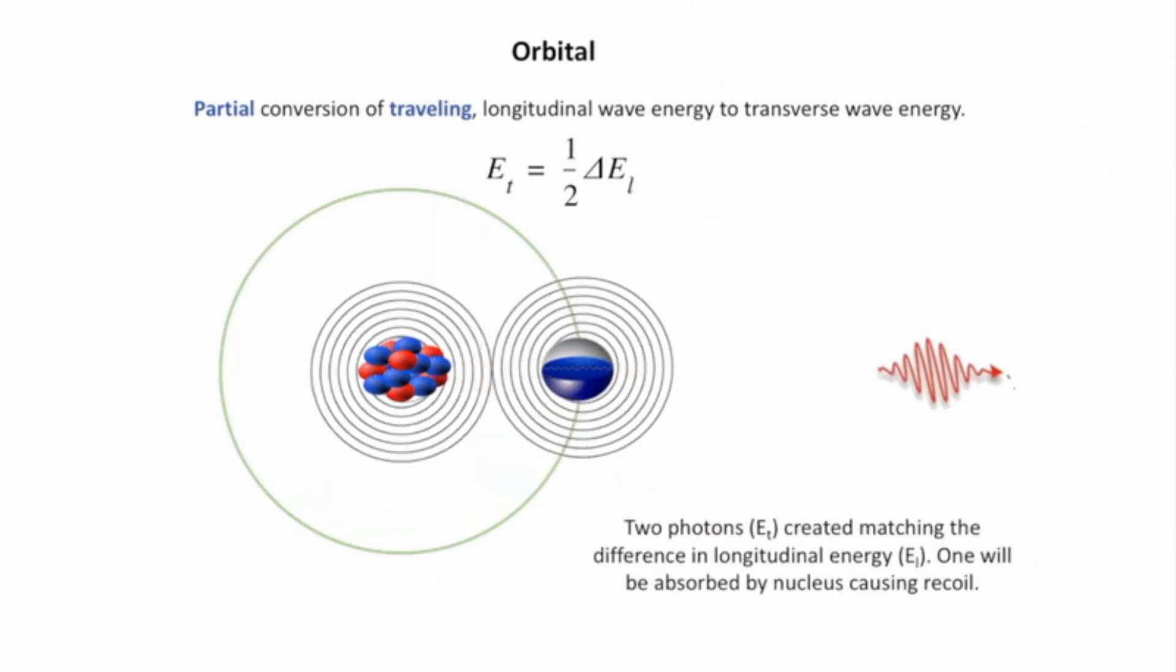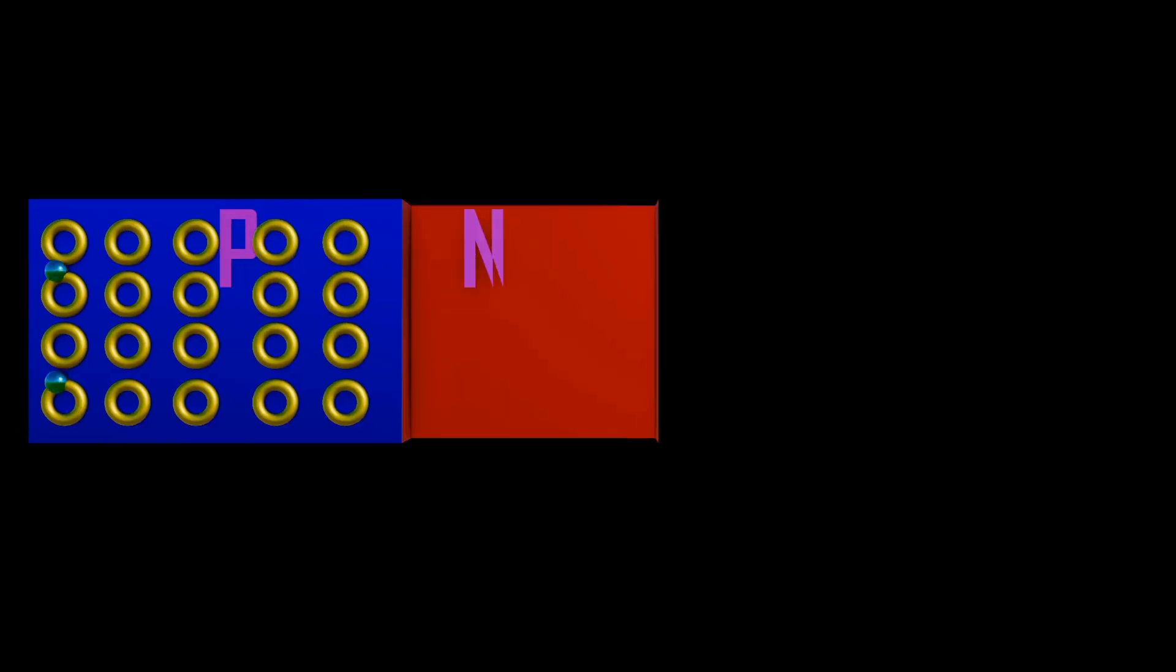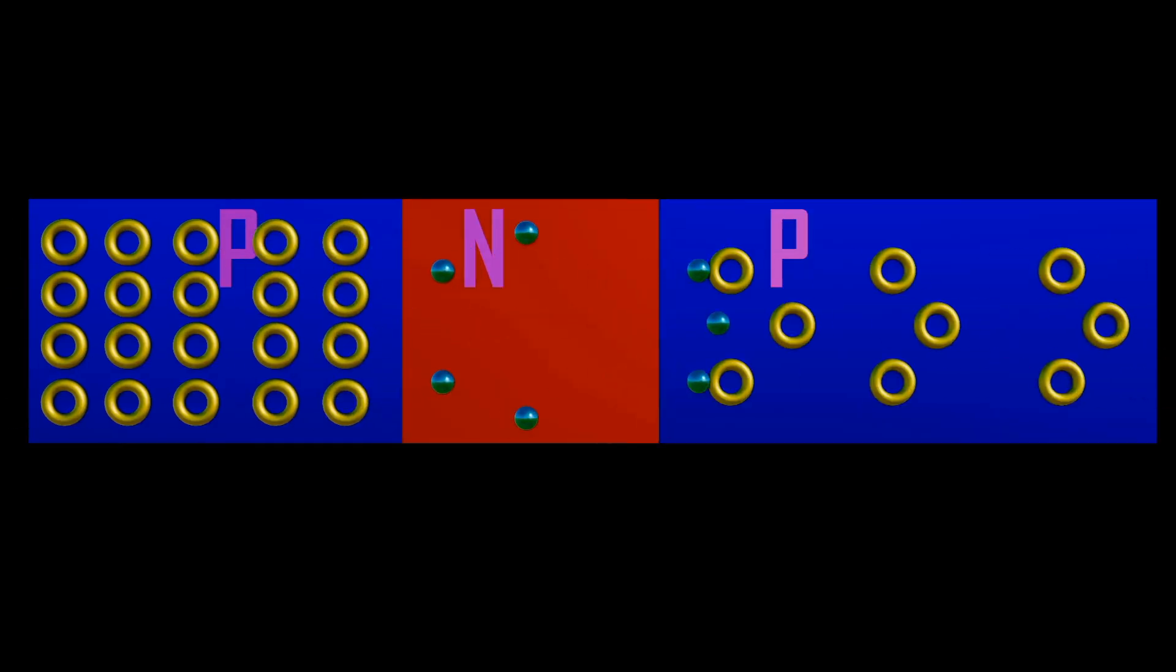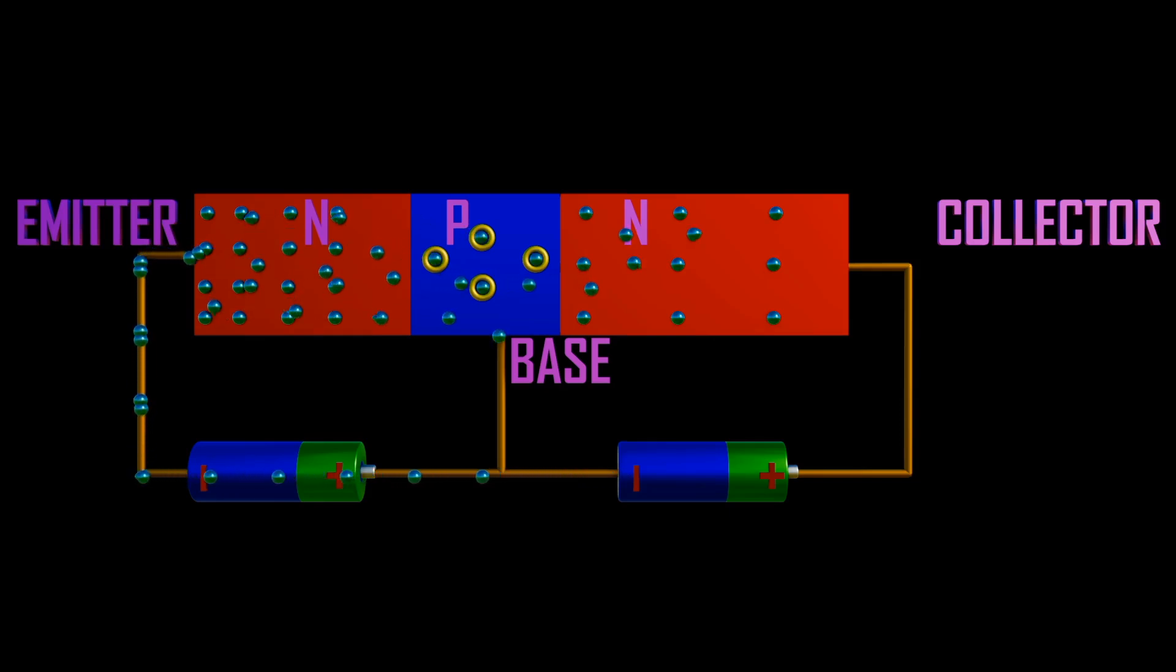Now when we add another junction in the P-N junction, either adding another P-type or N-type, we will form either a P-N-P or N-P-N transistor, and it is called a bipolar junction transistor.